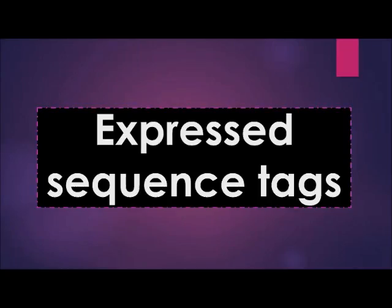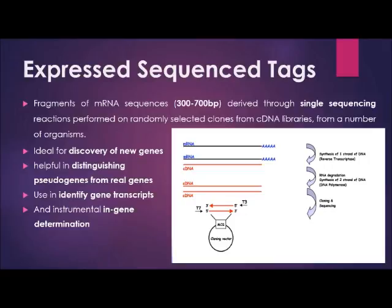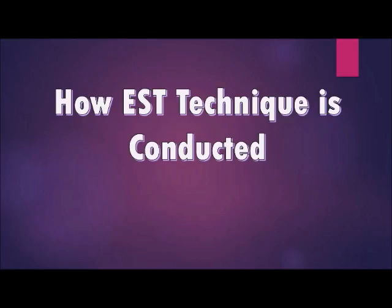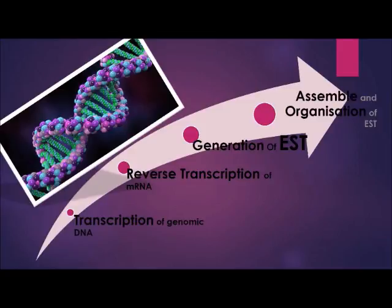Now we will talk about expressed sequence tags, or EST. EST is a fragment of mRNA sequence, about 300 to 700 base pairs in size, derived from single sequencing reactions performed on randomly selected clones from cDNA libraries originating from a number of organisms. EST are ideal for the discovery of new genes, identifying gene transcripts, and instrumental in gene determination. They are also helpful in distinguishing pseudogenes from real genes, which cannot be done from genomic sequence alone. The gene of interest can be retrieved from an EST database search using either nucleic acid or protein sequence, and databases can be used to search for similar genes simultaneously.